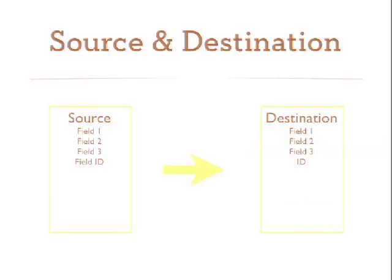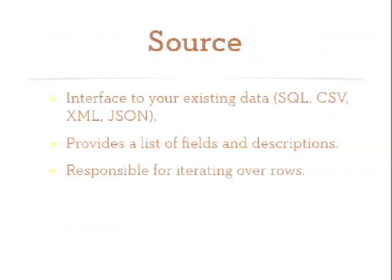So let's talk about the theory. You've got a source and a destination — something you're coming out of and something you're going into. The source is the interface into whatever you've already got: a CSV file, Microsoft SQL Server, another MySQL database, a web feed. What it really provides is a list of fields and optionally descriptions about them, and it just needs to be able to iterate across them.